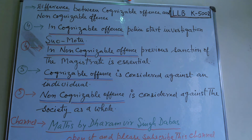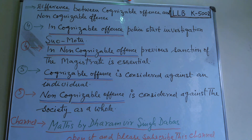I have covered five differences between cognizable and non-cognizable offense, and these differences are written on the board in parallel columns — one for cognizable and one for non-cognizable — covering all five points of differentiation.